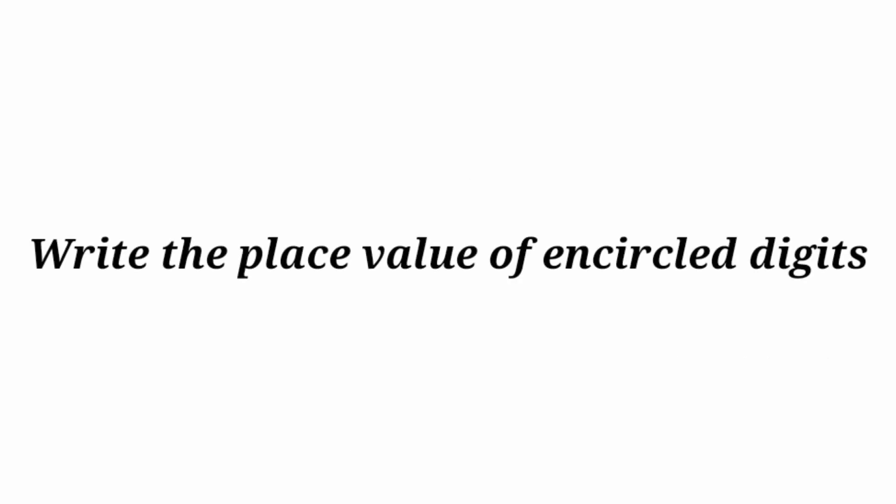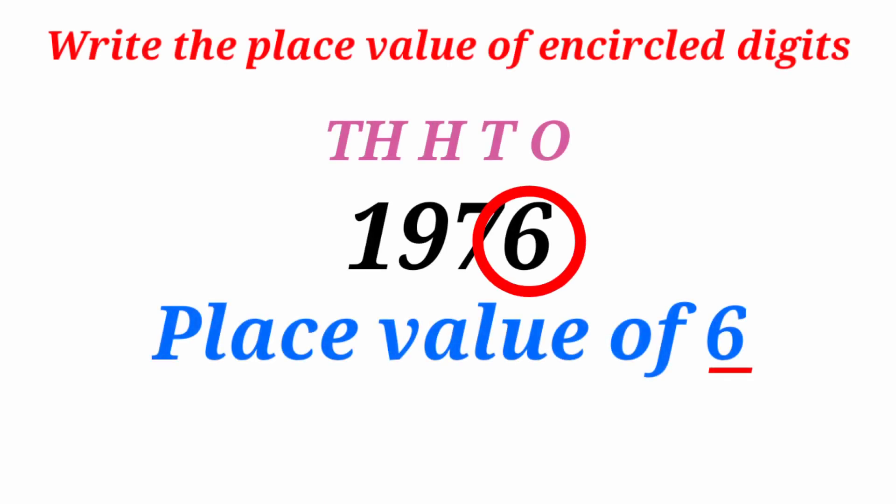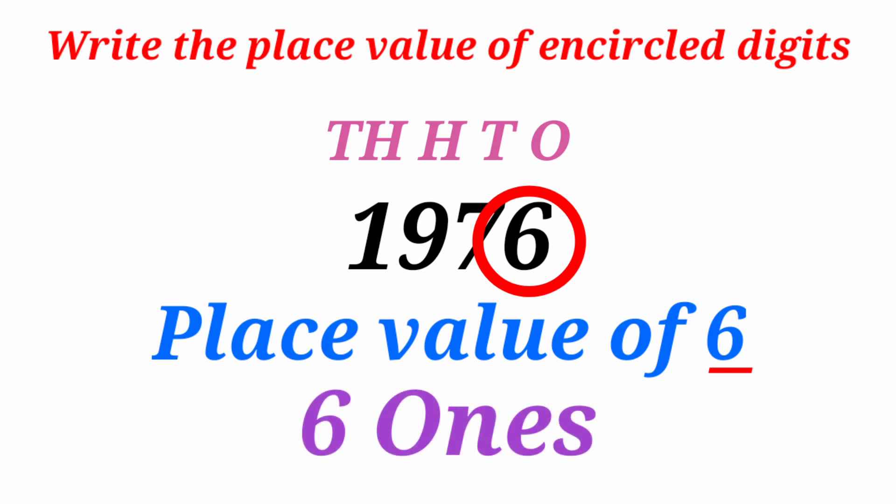Write the place value of the circled digit. Now you will find out the place value of the circled digit. 1,976 — the place value of 6. 6 is in the 1s place, so you will write 6 ones.